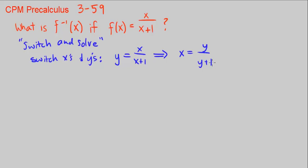Now we're going to solve for y. That's the switch part, and solve for y given this equation. What do we have to do? We want to get y out of the denominator. So let's rewrite this.